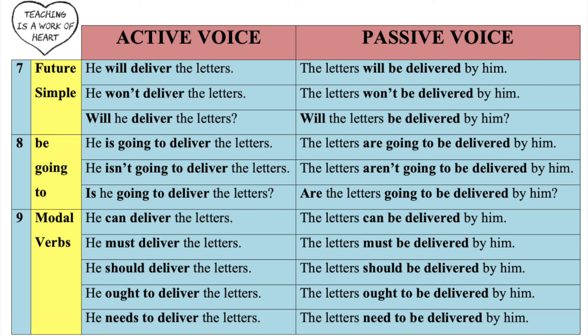He can deliver the letters. The letters can be delivered by him. He must deliver the letters. The letters must be delivered by him. He should deliver the letters. The letters should be delivered by him. He ought to deliver the letters. The letters ought to be delivered by him. He needs to deliver the letters. The letters need to be delivered by him.